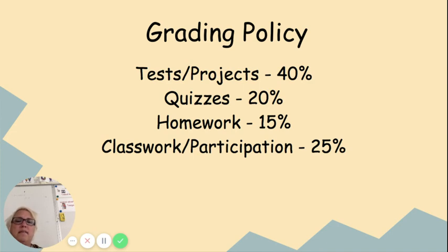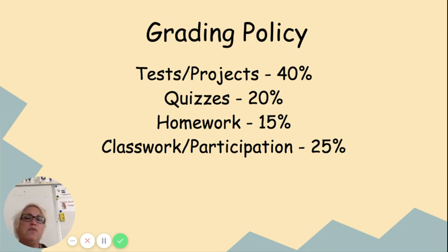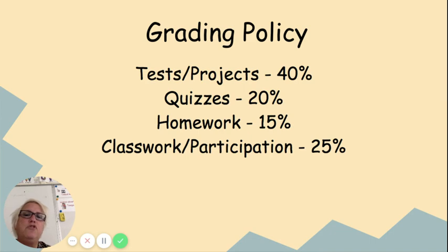For the grading policy: tests and projects are worth 40%, quizzes 20%, homework 15%, and classwork and participation 25%. We give one test or project per chapter — maybe a written test for one chapter, a project for another. Quizzes are usually four per chapter: approximately two for vocabulary and two for grammar.